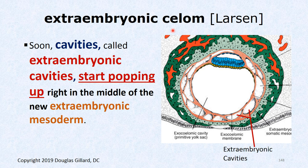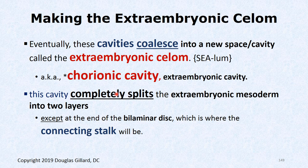Next, the solid extra embryonic mesoderm starts getting little cavities within it — extra embryonic cavities — which pop up everywhere and then coalesce into one big giant cavity called the chorionic cavity, also known as the extra embryonic coelom. So the chorionic cavity splits our extra embryonic mesoderm into two layers.